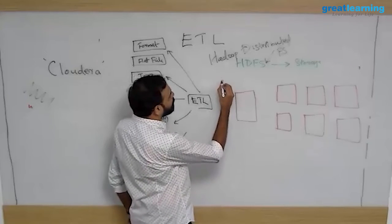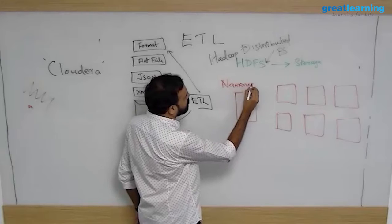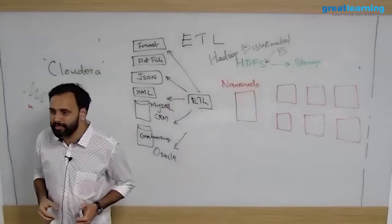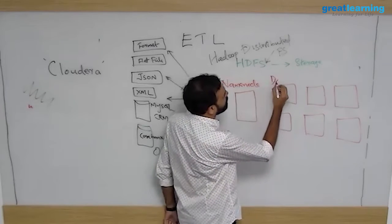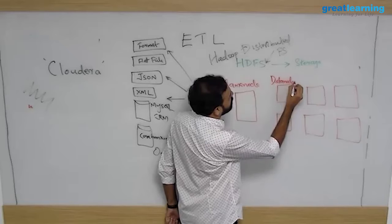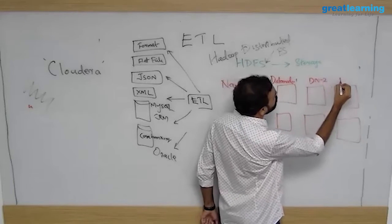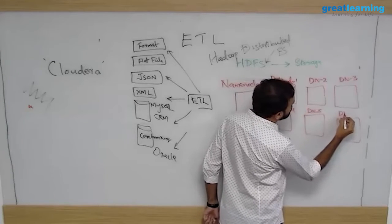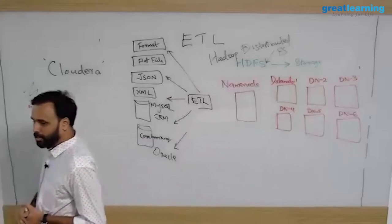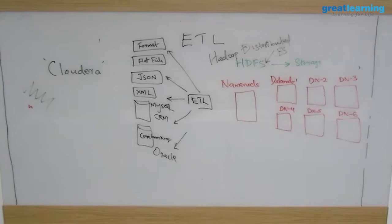The master will have a process called name node. The master machine will be running a process called a name node. When you install it, it will start running this process called name node. The slaves will be running a process called data node. I'll call it as data node 1, 2, 3, 4, 5, and 6. So technically we will say that there is one name node and six data nodes. Name node is the storage master and data node is the storage slave.